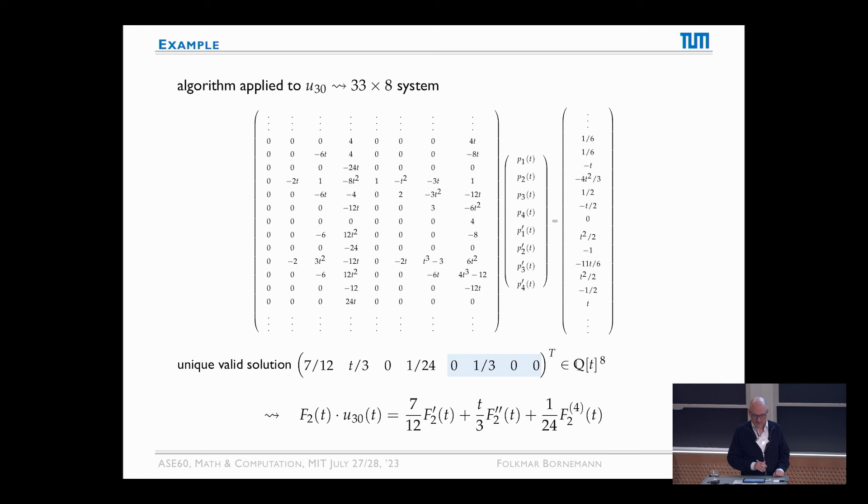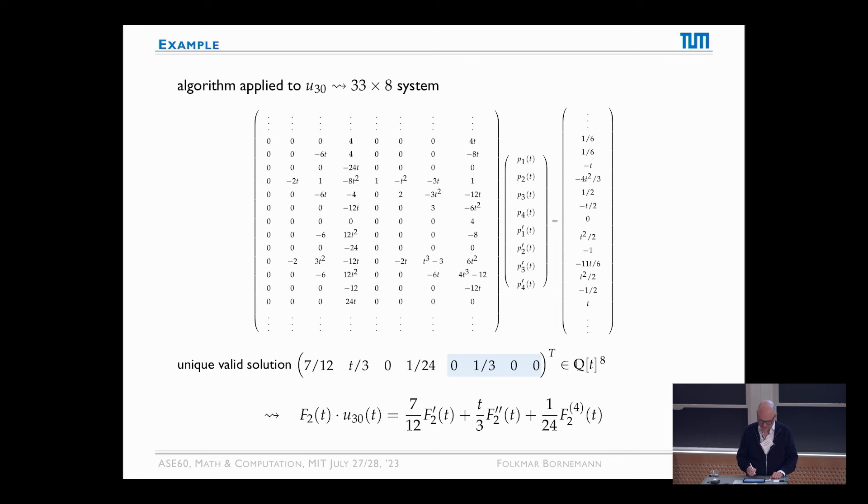So, if you do this algorithm to the u3,0 from the table of Tracy-Widom that I have shown you, then you get a 33 by 8 system. I show here only the middle 13 rows. And you get a unique solution. And if you take the derivatives of the first four entries, you get the second four entries. So it's a valid solution. And it reproduces Tracy and Gino and Tracy's entry in the table.